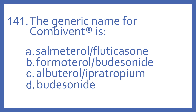Number 141. The generic name for Combivant is: A. Salmeterol with fluticasone, B. Formoterol with budesonide, C. Albuterol with ipratropium, or D. Budesonide.